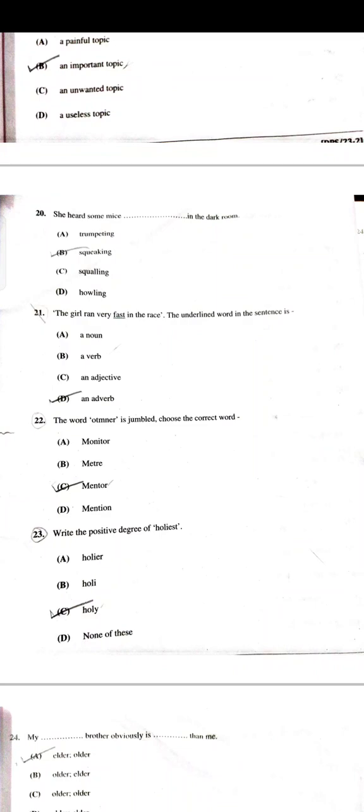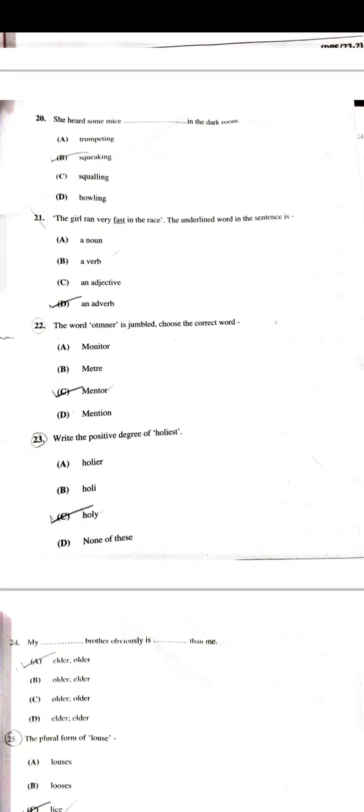'She heard some mice dash in the dark room' — squeaking in the dark room. 'The girl ran very fast in the race' — the underlined word in the sentence — it's an adverb.